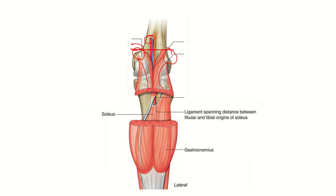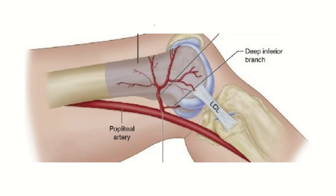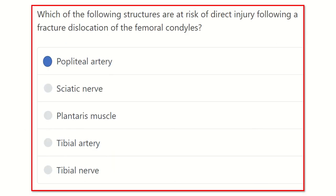The popliteal artery is very close to the lower part of the femur and is adjoined to the bone. Therefore, there is a high chance of injury to the popliteal artery. As shown in the next picture, the popliteal artery is very, very close to the femur, and any fracture in the condylar area will damage it.